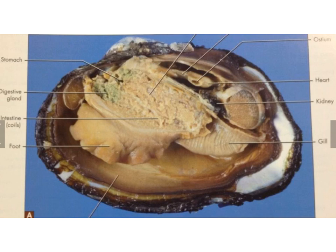Respiration is by use of the gills — do remember that sometimes the gills will be called the ctenidia. They are filter feeders, and that wraps up the anatomy of the clam.